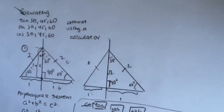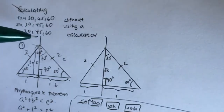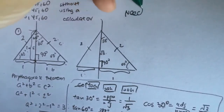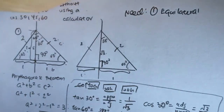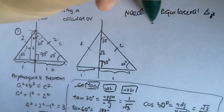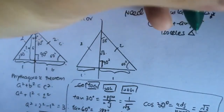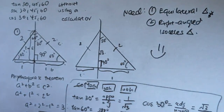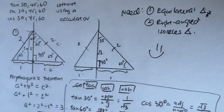So, to find tangent, sine, and cosine for 30, 45, and 60 degrees, you just need an equilateral triangle and a right-angled isosceles triangle. We will have more examples of how to calculate the exact angle for certain questions in the next video. Do remember to subscribe if you want more helpful videos to help you solve math problems.